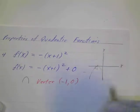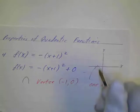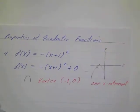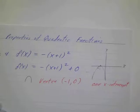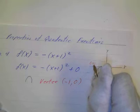Something like this. Looks like it's going to have one intercept, one x-intercept. And this is the vertex, it's going to be negative 1, 0.